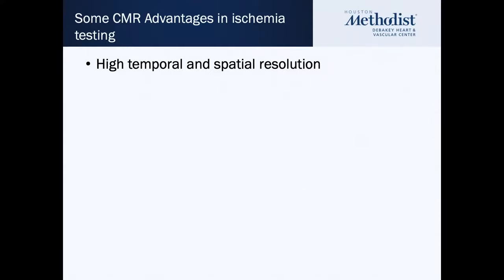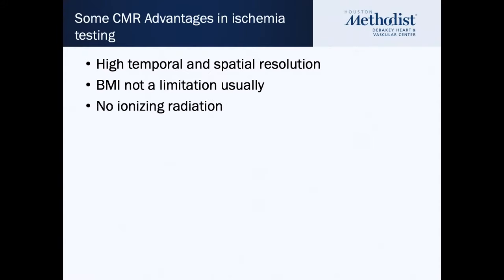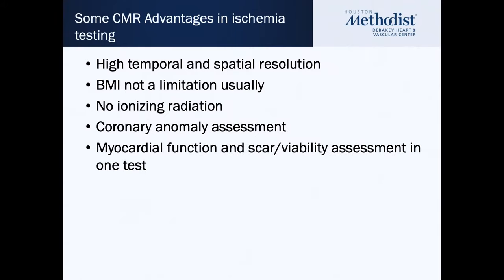So how is MRI done, and why is it done? Some of the advantages are higher spatial resolution and higher temporal resolution. Traditional SPECT cameras have resolution closer to about 10 millimeters, whereas with MRI you get 1.5 millimeter resolution for ischemic testing and scar testing — a significant advantage. BMI is usually not a limitation; very high quality imaging can be done in obese or morbidly obese patients. There's no ionizing radiation, and you can assess coronary anomalies in younger patients. A very important aspect of MRI is the ability to look at scarring and viability all in one test.